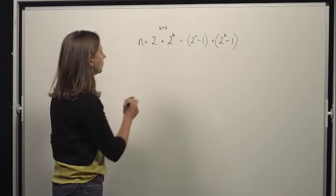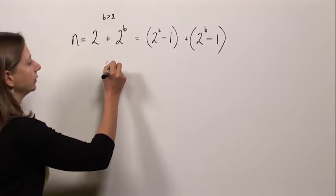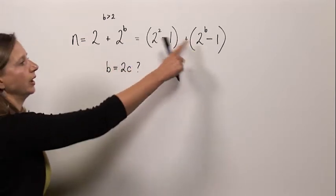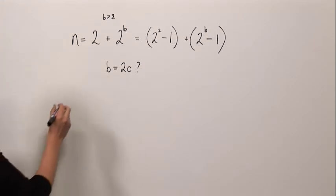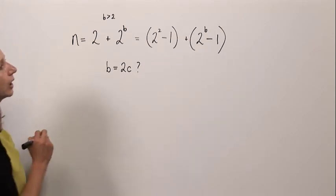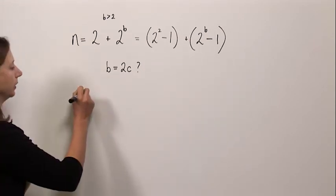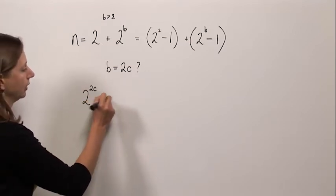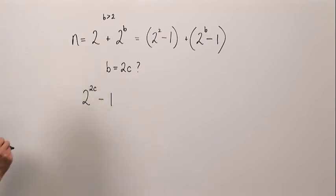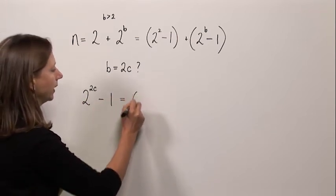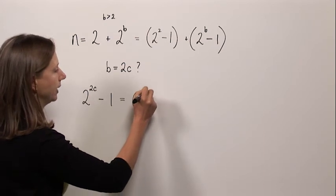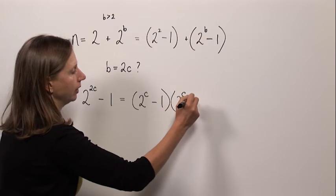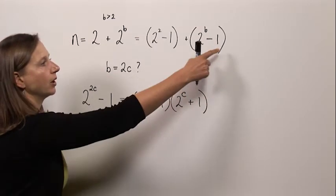Let's start by considering whether it's possible for b to be even. Remember that these are primes, these are Mersenne primes. So let's take a look at two to the power of b minus one. Well if b was even, we could rewrite that as two to the power of two c minus one, with c a natural number, and that is the difference of two squares. So we could rewrite that as two to the c minus one and two to the c plus one.